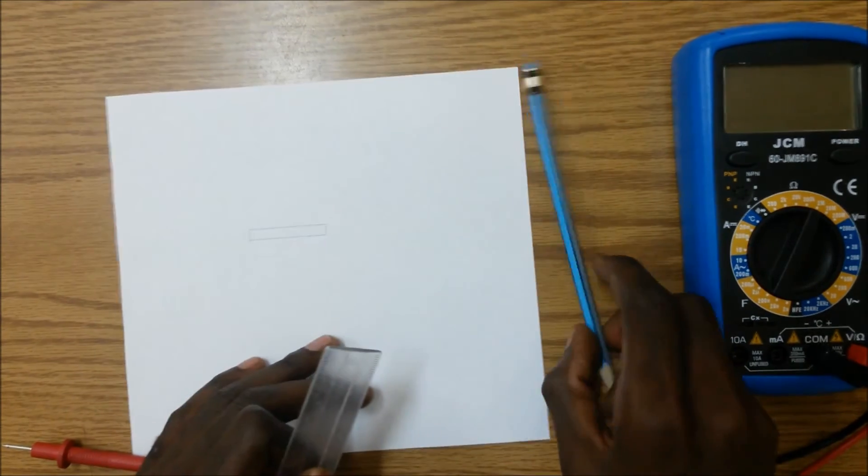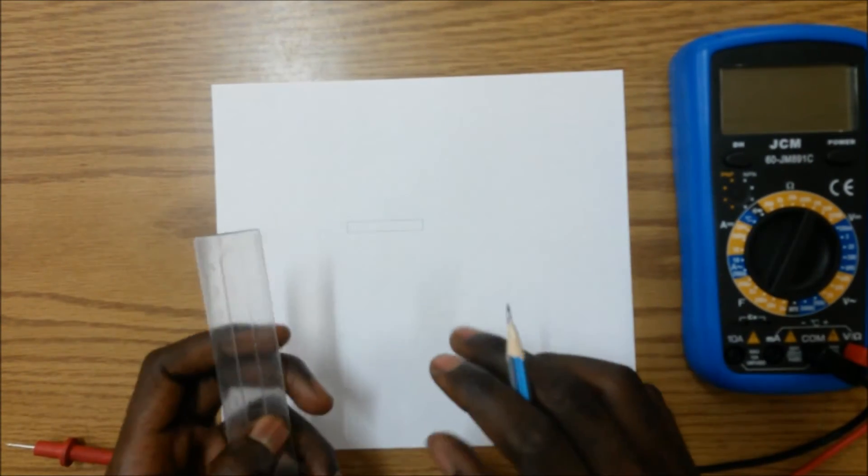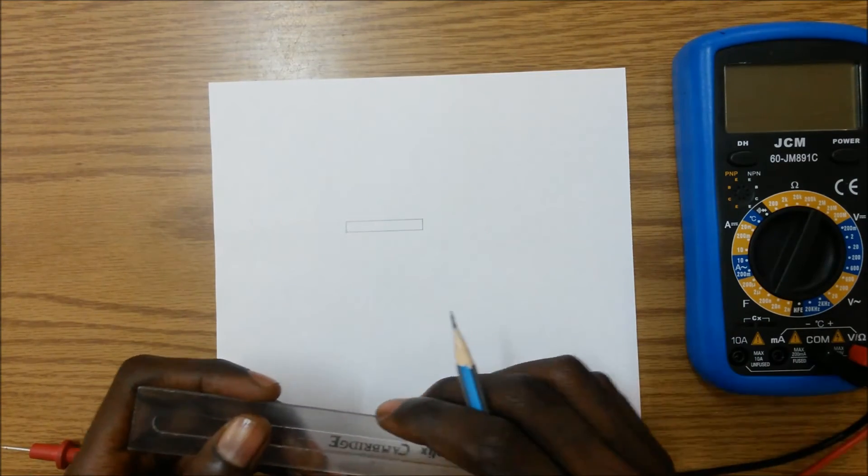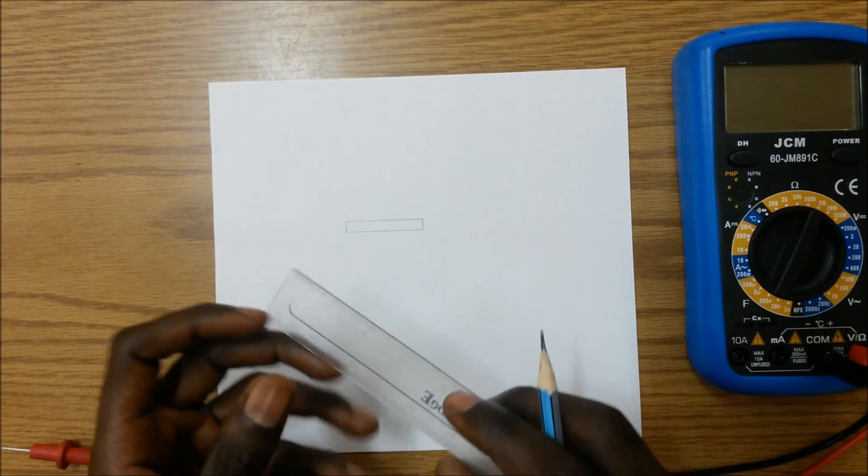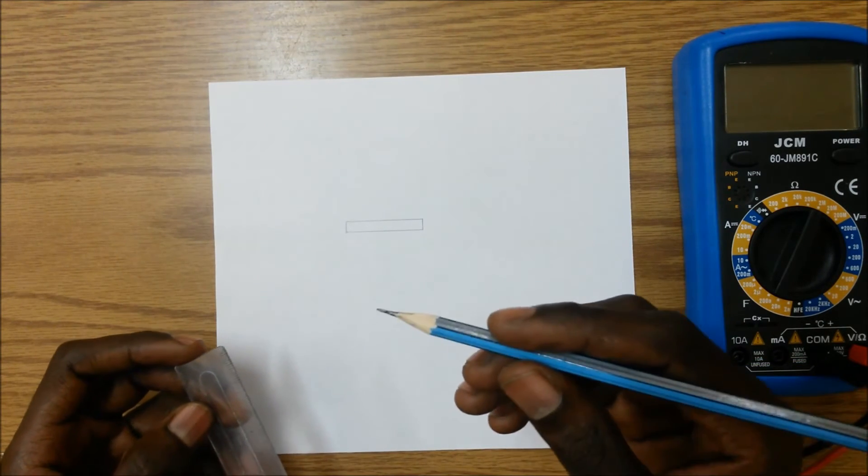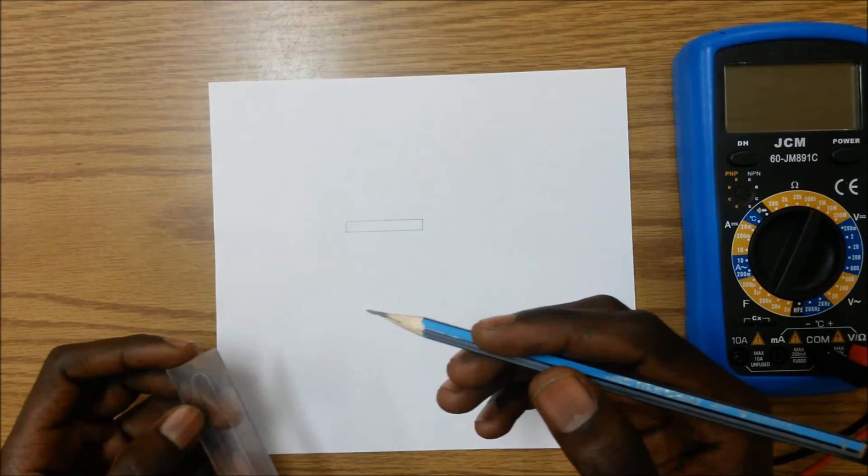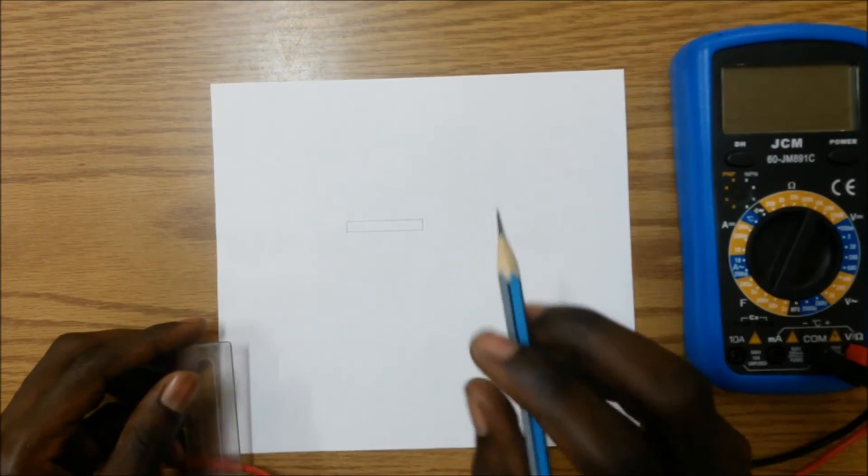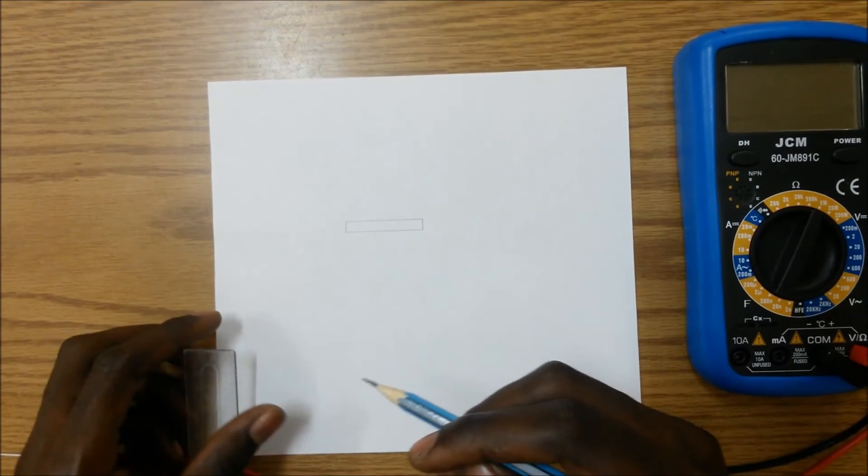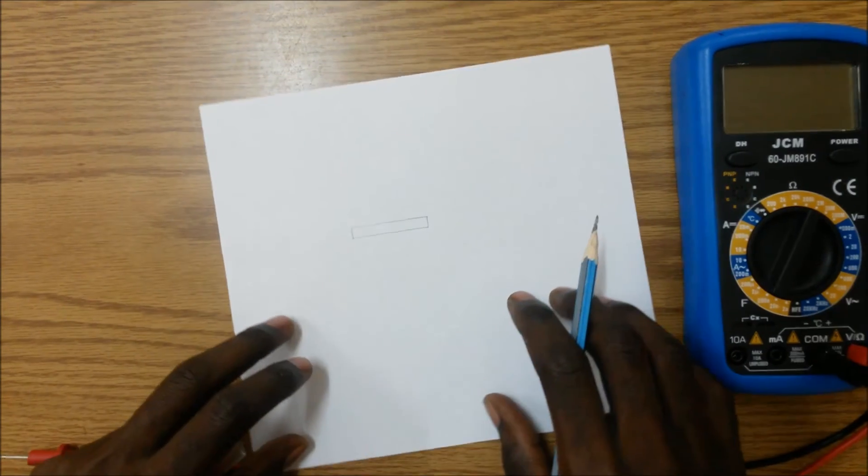Then you're going to take your pencil, preferably a bold pencil like this one here. I find that this blue pencil works really well. So we can use our pencil and then next thing we're going to do is use the pencil to shade in inside this rectangle.